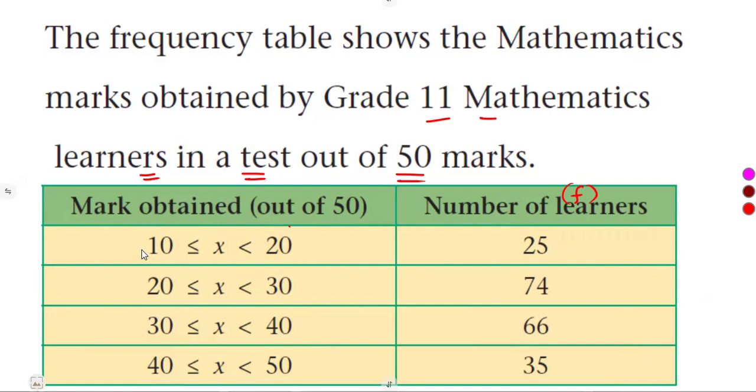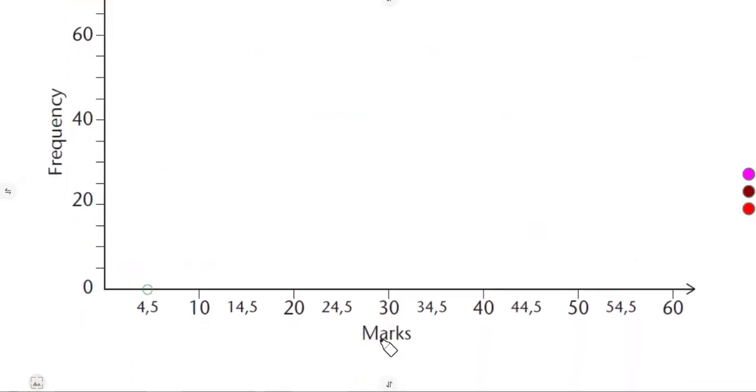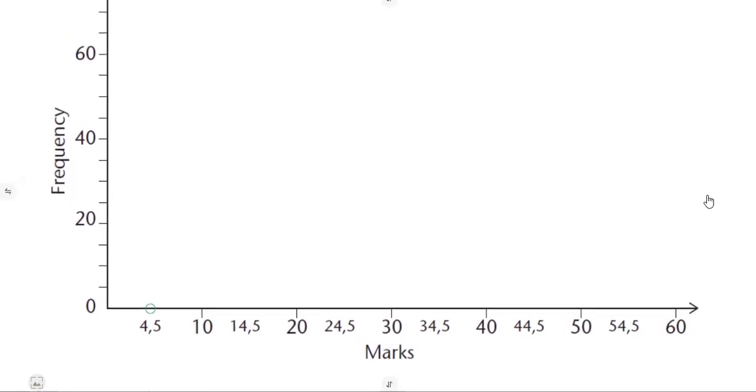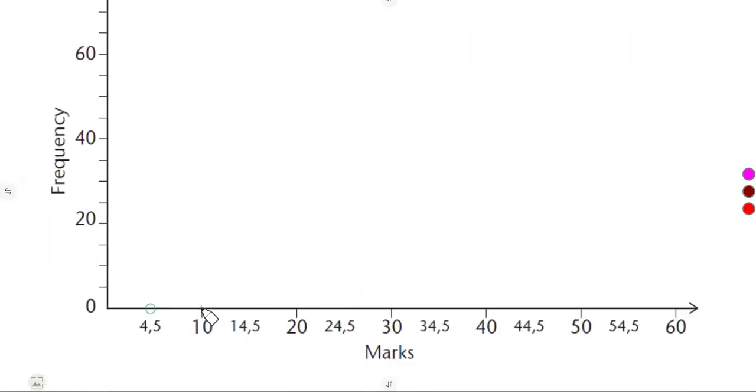Starting from 10 to 20 versus 25. We are simply going to need the classes, where we have got the marks, the class intervals, and the frequency. Nothing much. So, the first one, 10 to 20, versus 25. 10 to 20, but it must be versus 25.